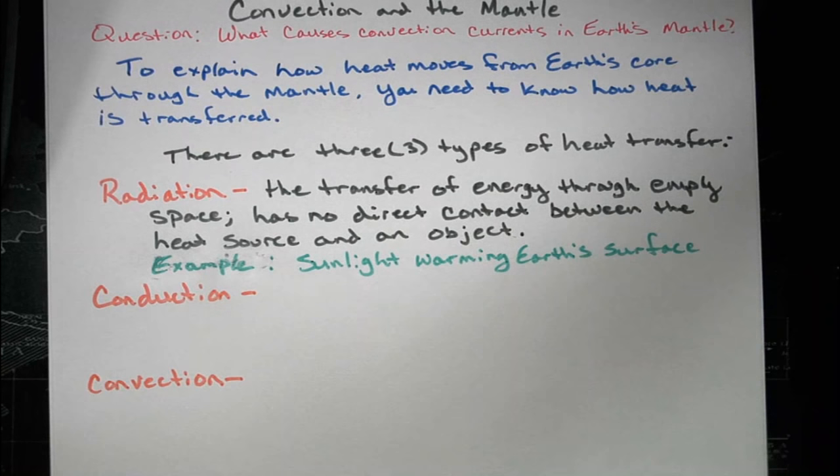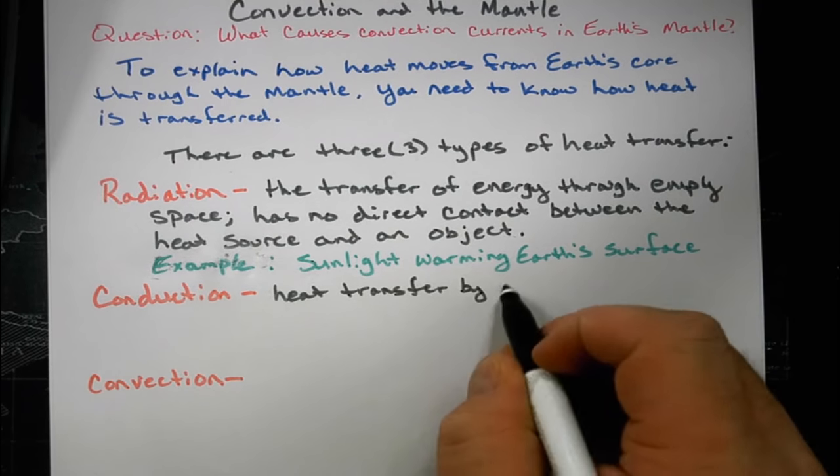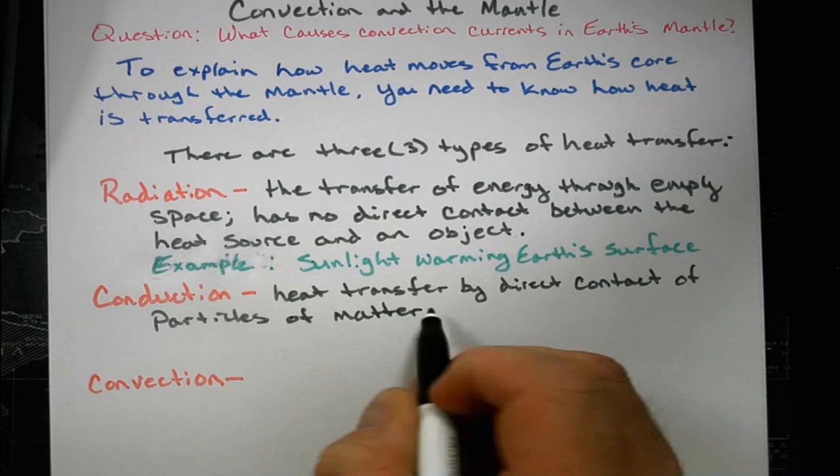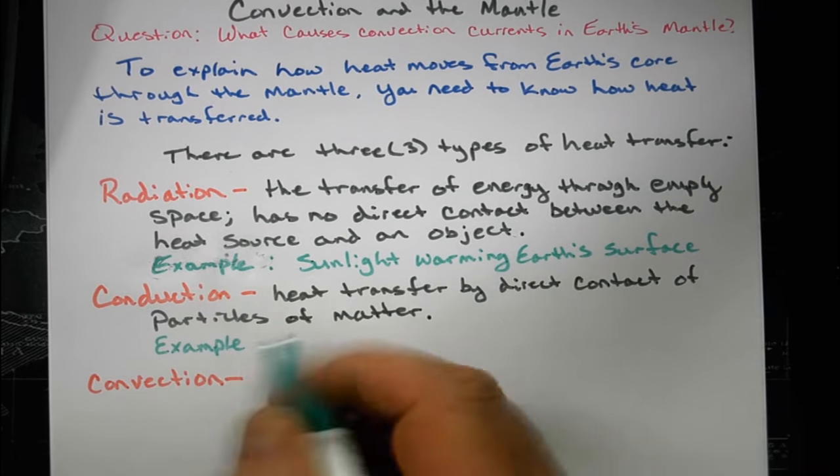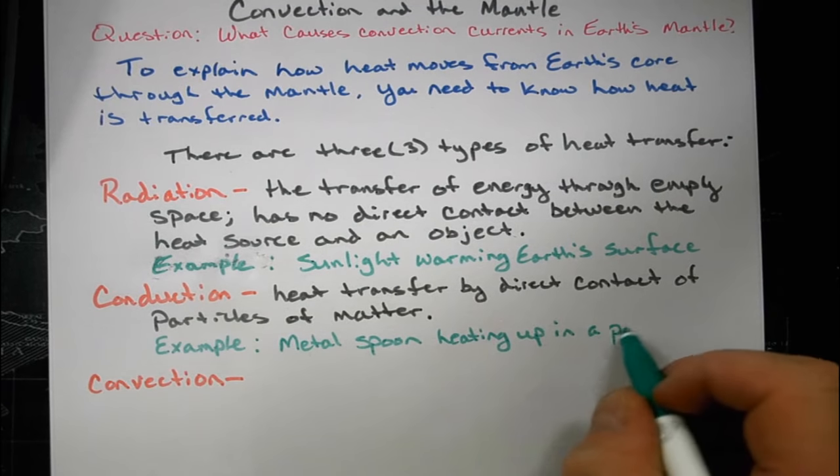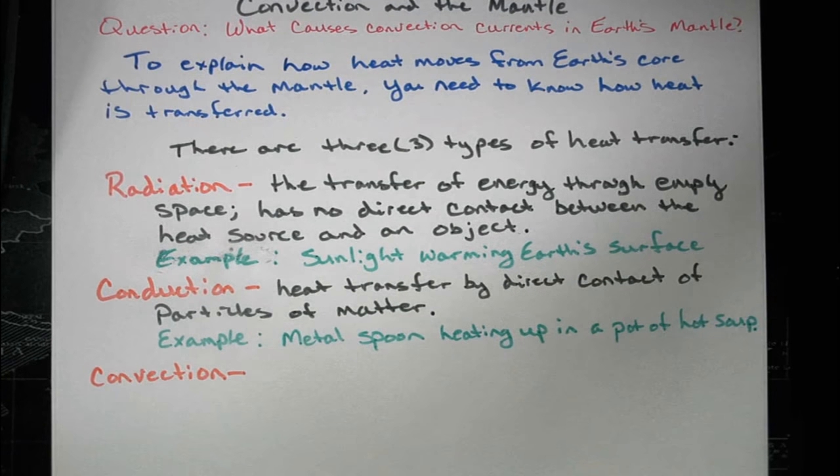The next one is conduction. Conduction is the heat transfer by direct contact of particles of matter. For example, a metal spoon heating up in a pot of hot soup. You put the metal spoon in there and the heat climbs up the spoon so that when you touch it and it's not even inside the pot, it's hot.